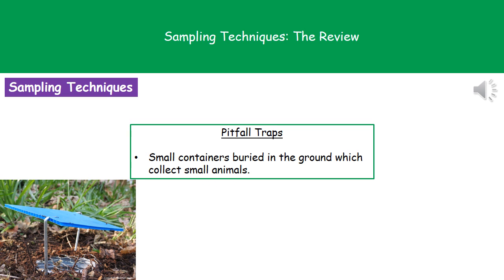The last technique is a pitfall trap. We bury a container like a jam jar in the ground, making sure the top is level with the surface. We put a small roof over it so it doesn't fill with rainwater. Beetles wandering along the ground will fall into the pitfall trap. We return later, take the jar out of the ground, count and identify what's present, then release them safely.